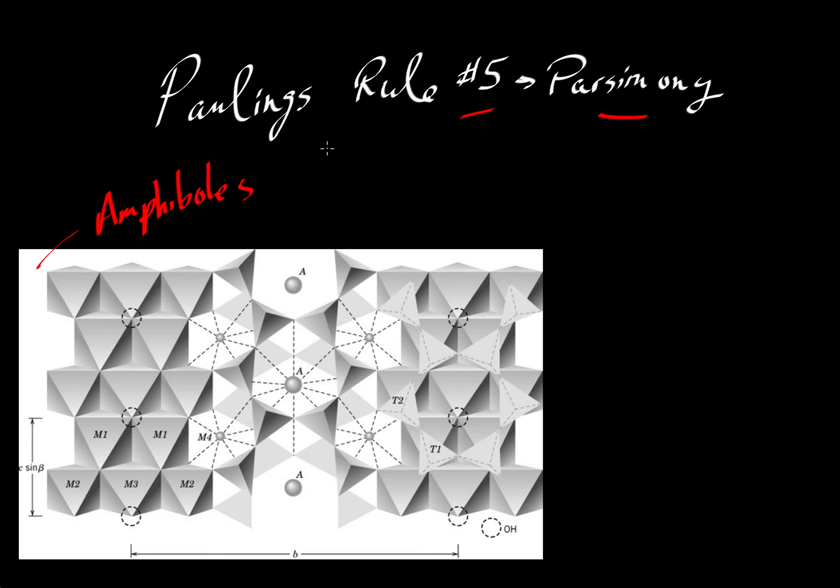The generalized formula is usually written something like this, where we have a W that has zero to one atoms and then two X atoms, five fellows that we refer to as Y, and then a Z, and we'll take eight of those, 22 oxygens, and then we'll complete the charge balance by taking two of either a hydroxyl or a fluorine. So that's the generalized formula.